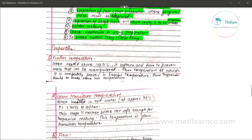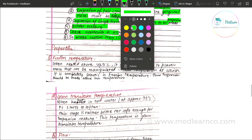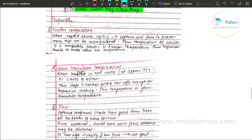Properties of impression compound: the first property is fusion temperature. When heated above 43.5 degrees Celsius, it starts to soften and flows to a plastic mass which can be manipulated. The temperature at which this mass is completely plastic is known as the fusion temperature. The impression has to be made above this temperature.